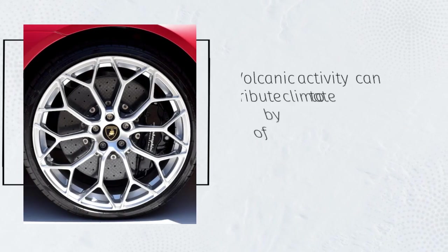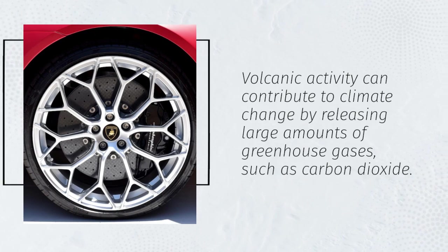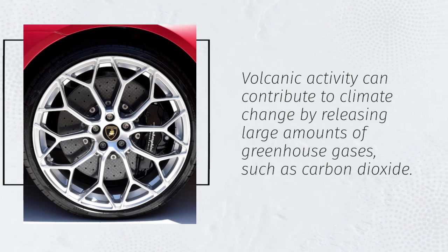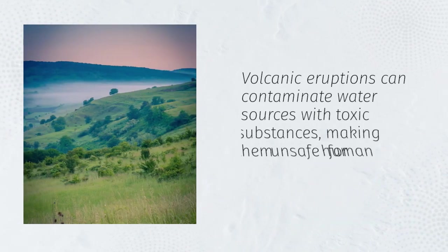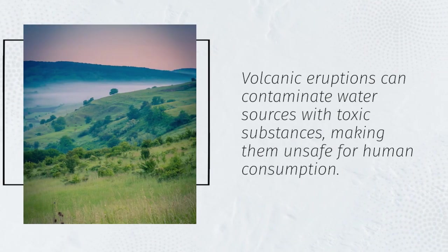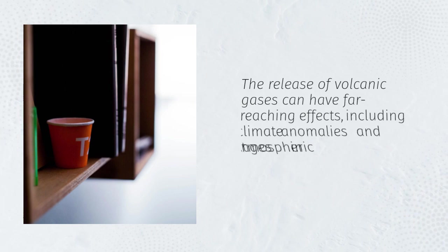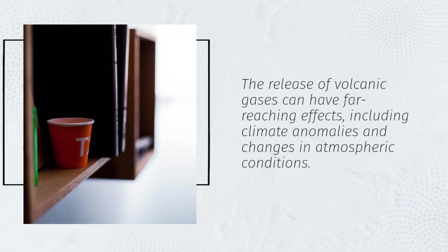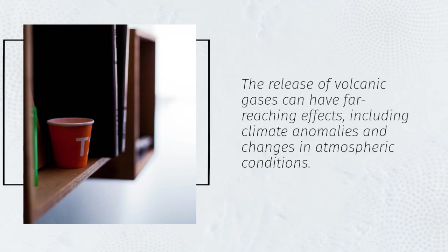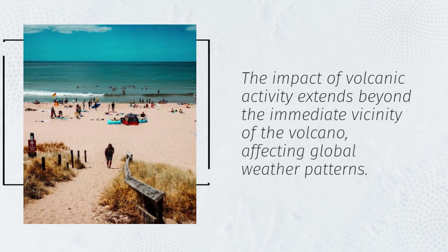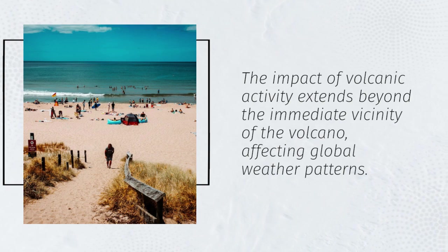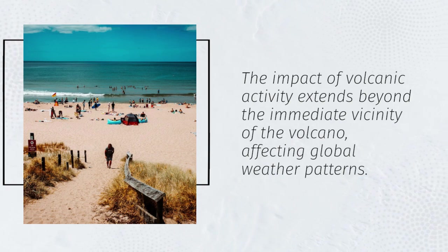Volcanic activity can contribute to climate change by releasing large amounts of greenhouse gases, such as carbon dioxide. Volcanic eruptions can contaminate water sources with toxic substances, making them unsafe for human consumption. The release of volcanic gases can have far-reaching effects, including climate anomalies and changes in atmospheric conditions. The impact of volcanic activity extends beyond the immediate vicinity of the volcano, affecting global weather patterns.